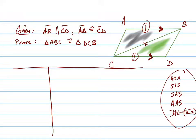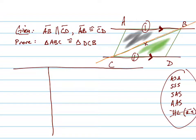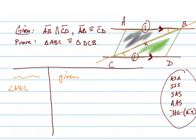Let's think through whether we're going to use a side or an angle. If you have two parallel lines and a transversal cutting those two lines — and we do have this transversal right here — we can prove that angles are equal to each other using parallel postulates. Namely, we're going to prove that angle ABC is congruent to angle DCB, and the reason is that they are alternate interior angles, AIA.